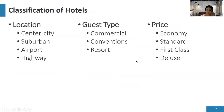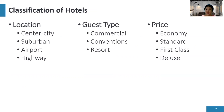Now let's talk about the classification of hotels. Hotels are classified depending on location, guest type, and price. Wherever the hotel is located, it will be classified based on its location.